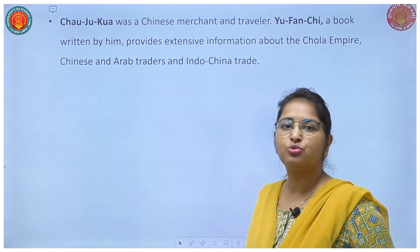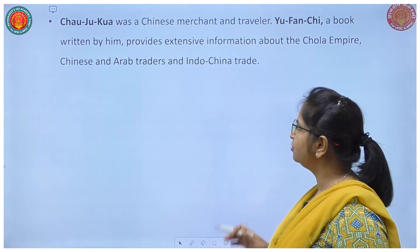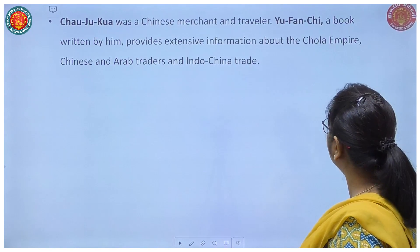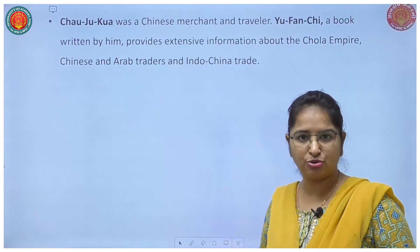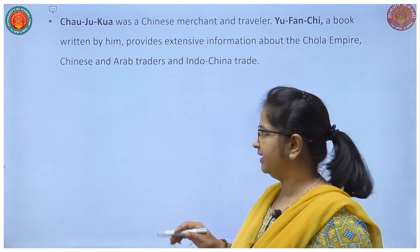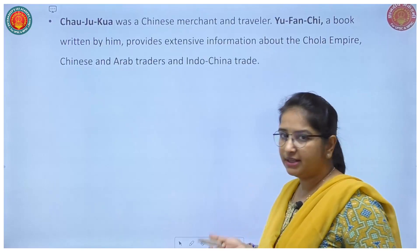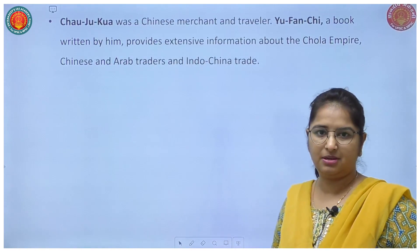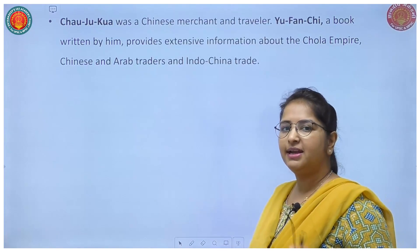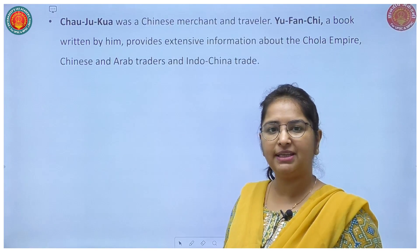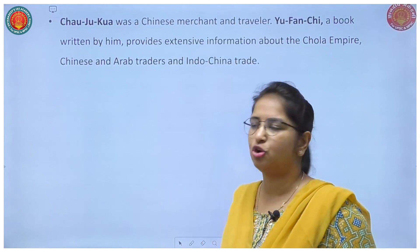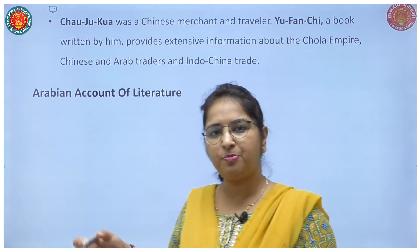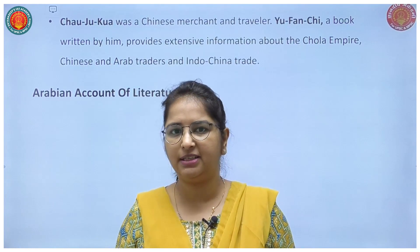Wensang's book Siu Ki provides extensive information about the social system, governance, and education system of India. Moving ahead, Chao Ju Kuan was a Chinese merchant and traveler. He wrote the book Yu Fan Xi, which provides extensive information about the Chola Empire as well as Chinese, Arabic, and Indochina trade. This completes the first part of our question.